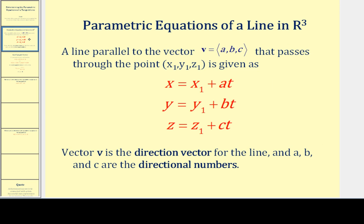Let's start off by reviewing the parametric equations of a line in R3. A line that is parallel to the vector v with components ABC and passes through the point (x₁, y₁, z₁) is given by three parametric equations. The vector parallel to the line gives us the direction numbers, shown here as the coefficients of t.